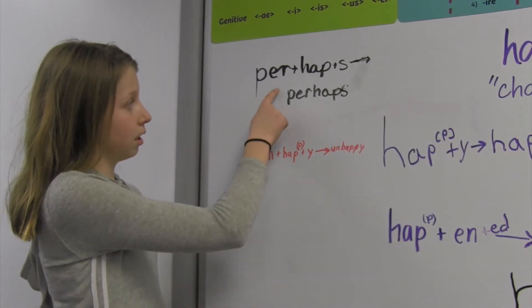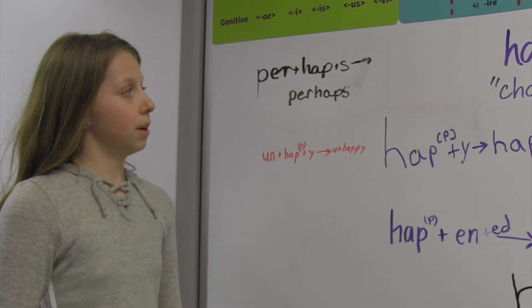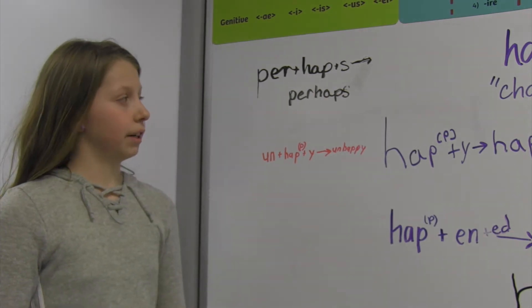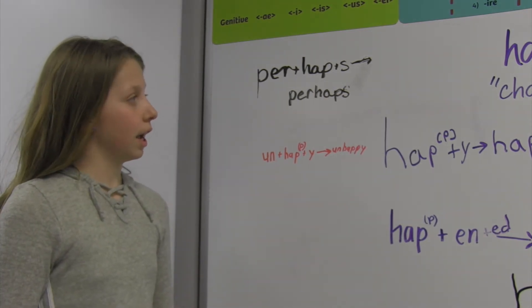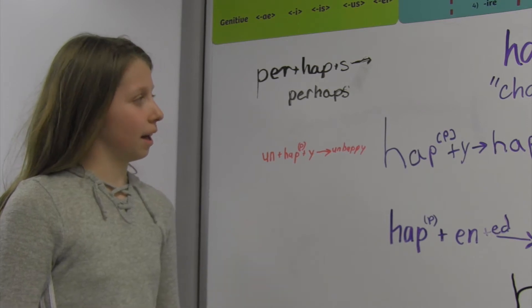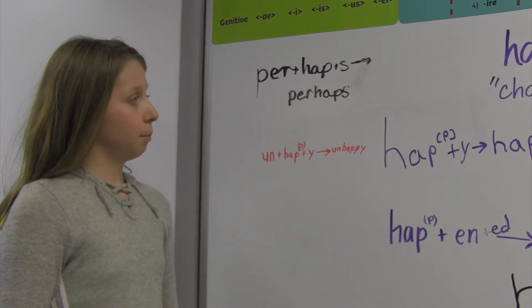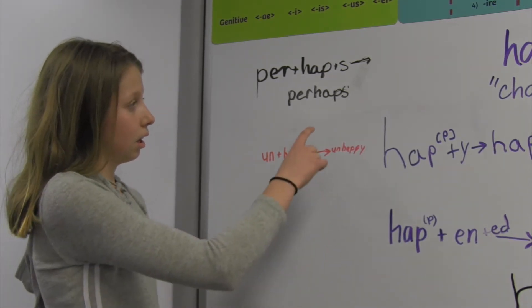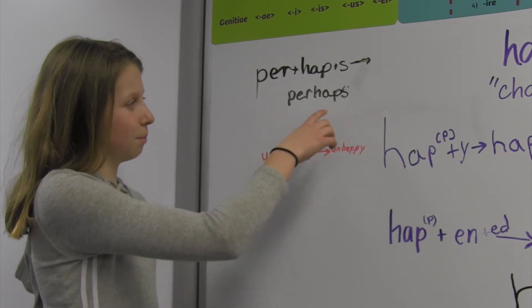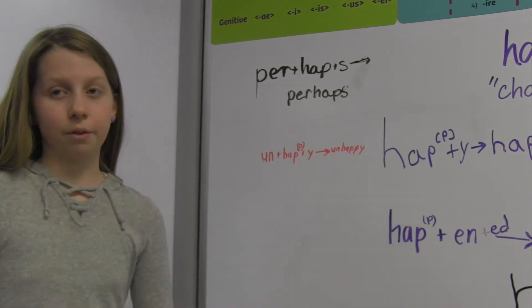Perhaps. P-E-R plus H-A-P plus S is rewritten as P-E-R-H-A-P-S. We do not double the P because the suffix does not begin with a vowel.